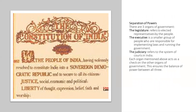Separation of powers: There are three organs of the government. The legislature, which refers to elected representatives chosen by the people. The executive is a smaller group of people who are responsible for implementing laws and running the government. And then the judiciary, which refers to the system of courts in India. Each organ acts as a check on the other organs, which ensures the balance of power between all three.